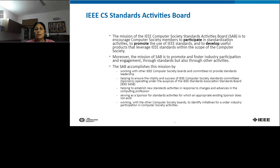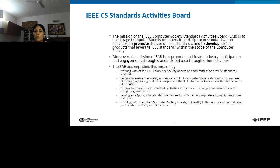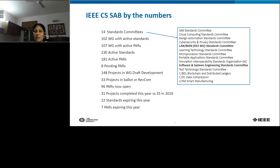The mission of the IEEE Computer Society Standards Activity Board is to encourage CS members to participate in standardization activities, to promote the use of IEEE standards, and to develop useful products that leverage IEEE standards within the scope of the computer society. Moreover, the mission is to promote and further industry participation and engagement through standards and other activities. There are many active committees, projects, and working groups that work in tandem.